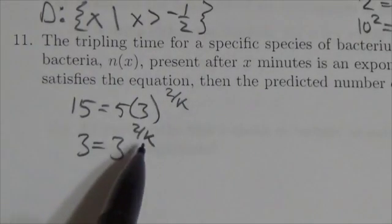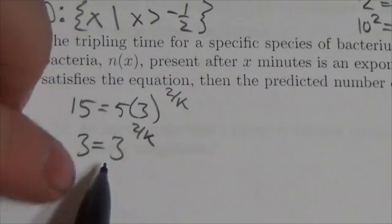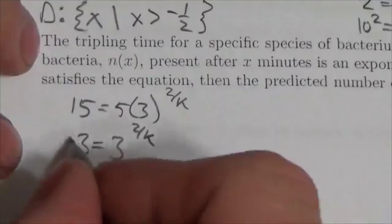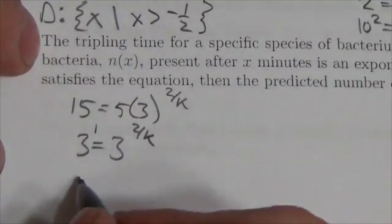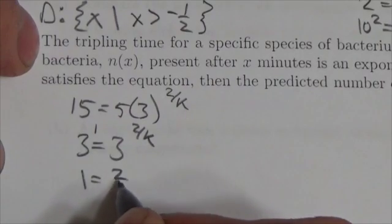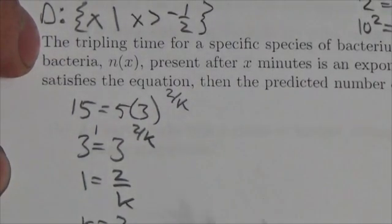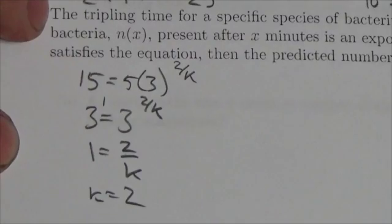So now I've got power equal power. The bases are the same. So all I got to do is set the exponents equal to each other. And if there's no exponent there, it's a 1. So this is 1 equals 2 over k. So that means k equals 2. k equals 2.